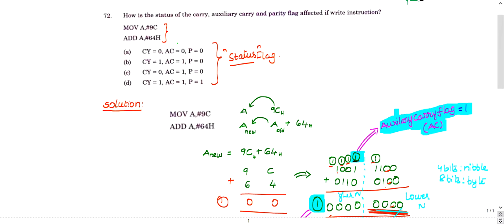Looking at the options: carry flag is 1, so we eliminate options A and C. Auxiliary carry flag is 1 and parity is also 1 — it is not zero. Many books give option B as the answer, but that is incorrect. Option D is the right choice. Remember: parity flag is 1 when there are an even number of ones. If you have any queries, post them in the comment box and subscribe for more updates. Thank you.